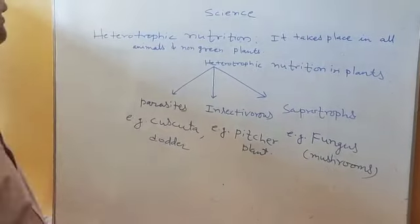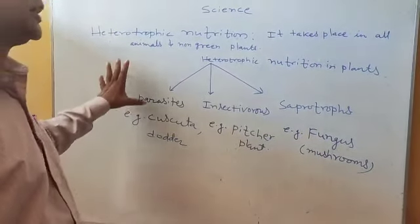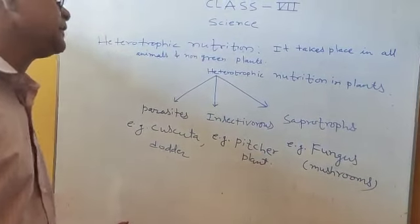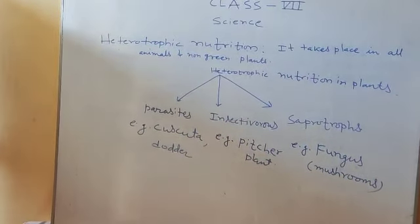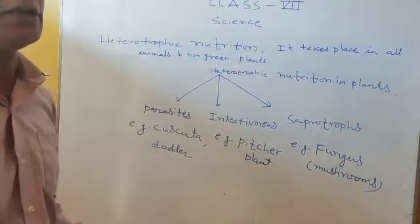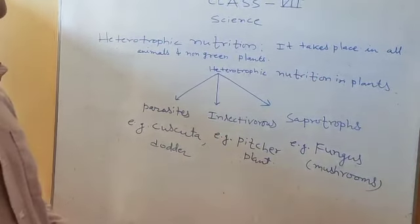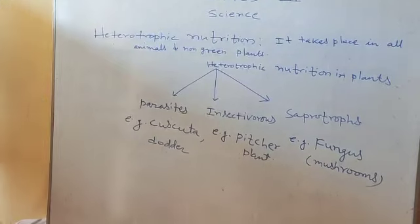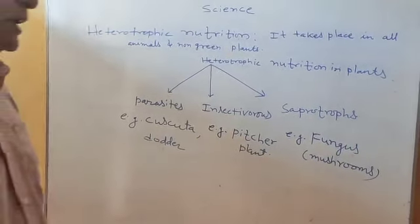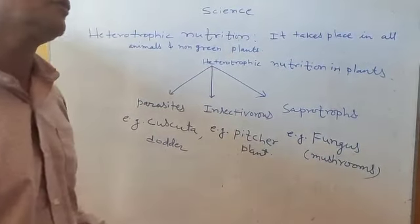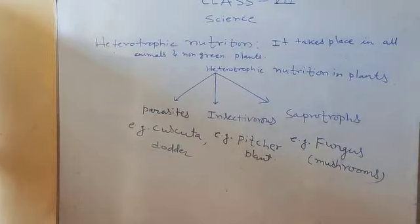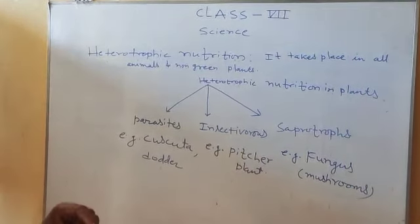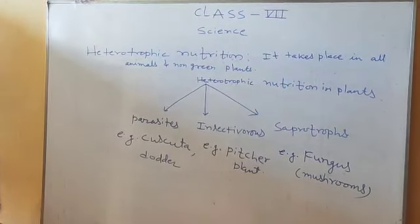In this chapter, we studied about nutrition, types of nutrition, why nutrition is essential, and its importance. Photosynthesis is very important for our daily life because it gives us food. Plants use it, and most of the food or plants produced are used by us.